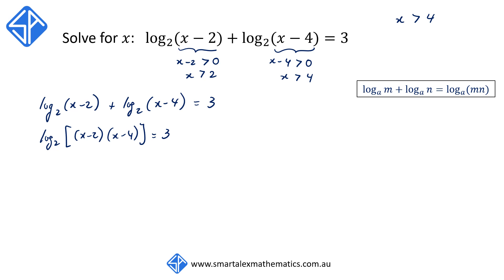Then we're going to convert this into exponential form so that we have x minus 2 times x minus 4 is equal to 2 cubed, which is equal to 8.